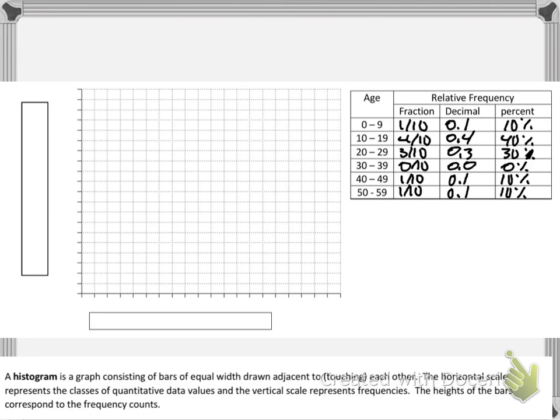Now notice again that we can express our relative frequency as a fraction, as a decimal, or a percent. So we're going to have to make a decision about which of these three we want to use to display on our graph. And it really doesn't matter. It's really up to you. I think I'm going to use percents just because I feel like percents are the easiest thing for our minds or our brains to really sort of process and understand.